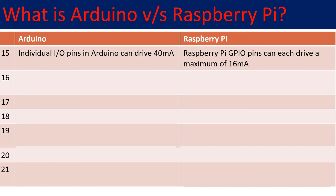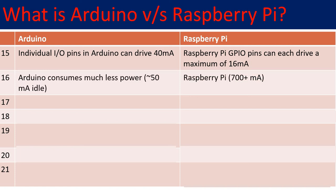Arduino pins can drive a maximum of 40 milliamps of current per individual I/O pin, whereas Raspberry Pi GPIO pins can each drive a maximum of 16 milliamps. Arduino consumes less power than the Raspberry Pi — approximately 50 milliamps for Arduino versus 700-plus milliamps for Raspberry Pi.